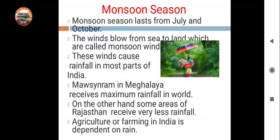Monsoon season — jisko rainy season bhi kaha jata hai. It lasts from July to October. You might say that in July and August it feels even hotter. The heat felt in those months is because of humidity.